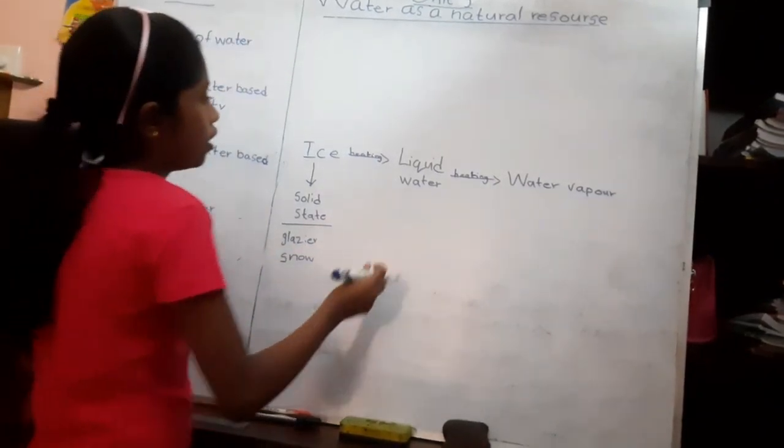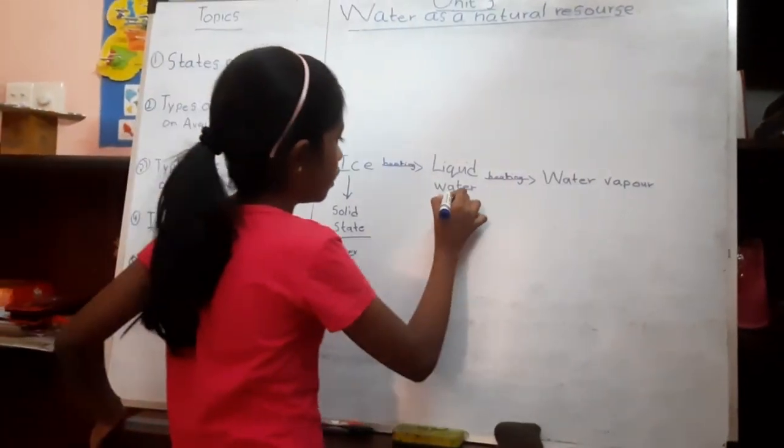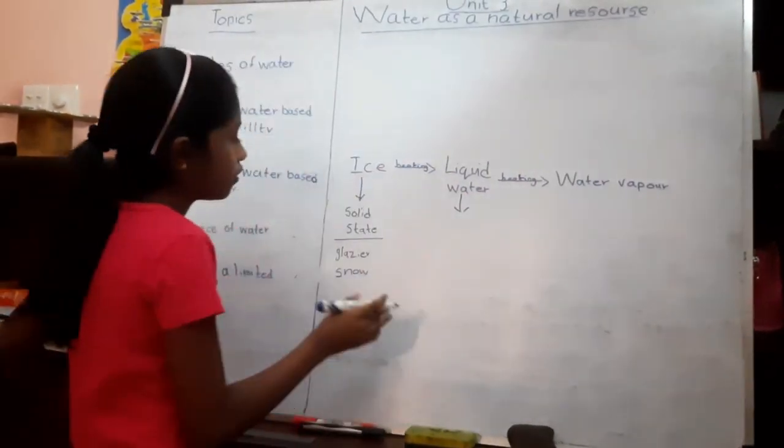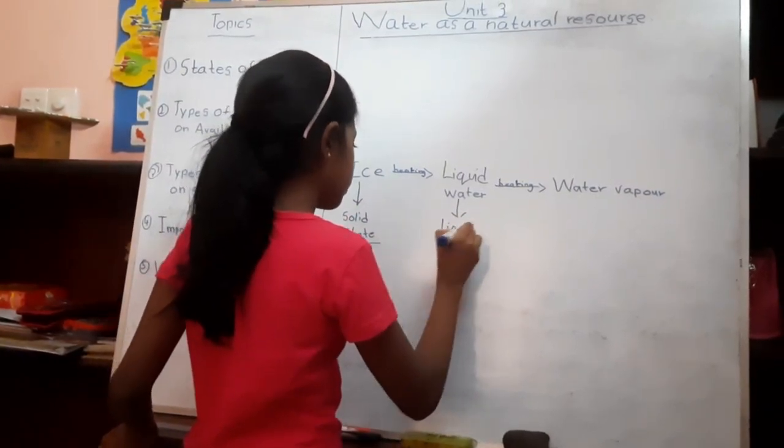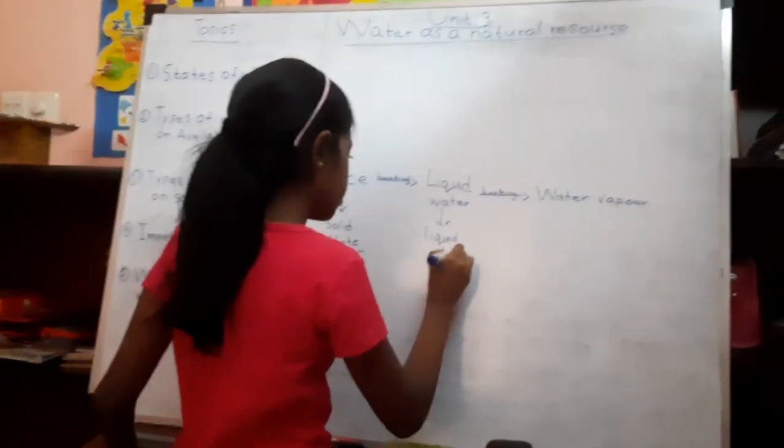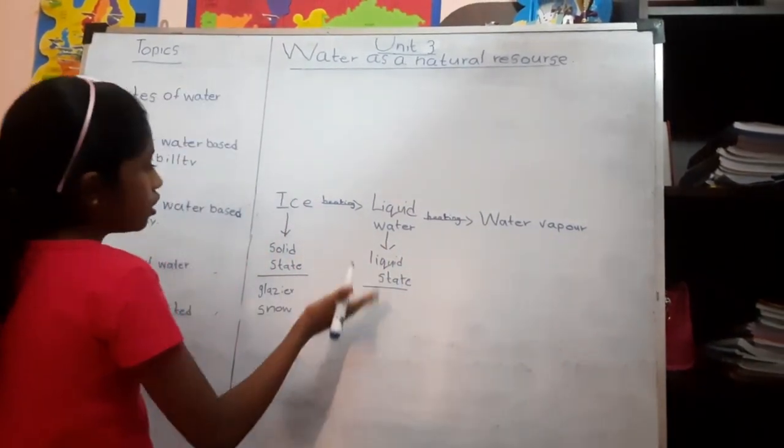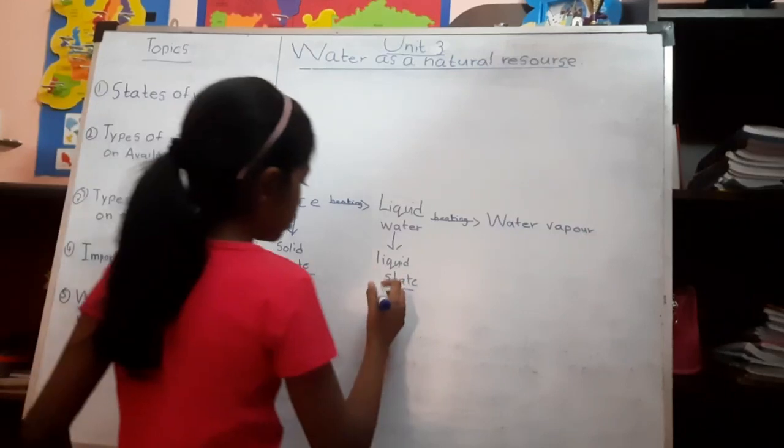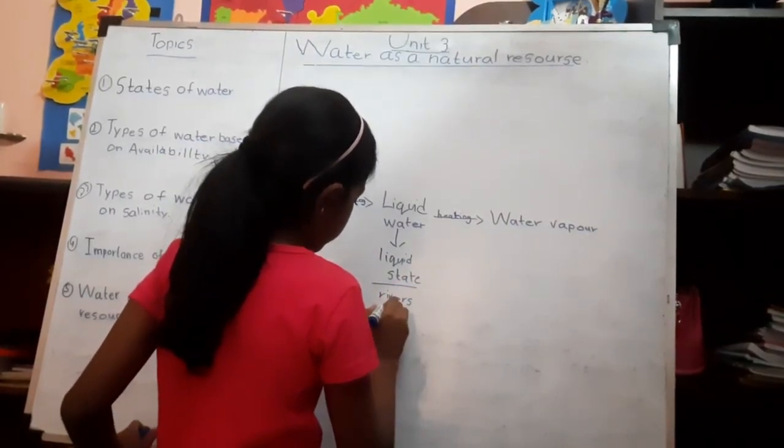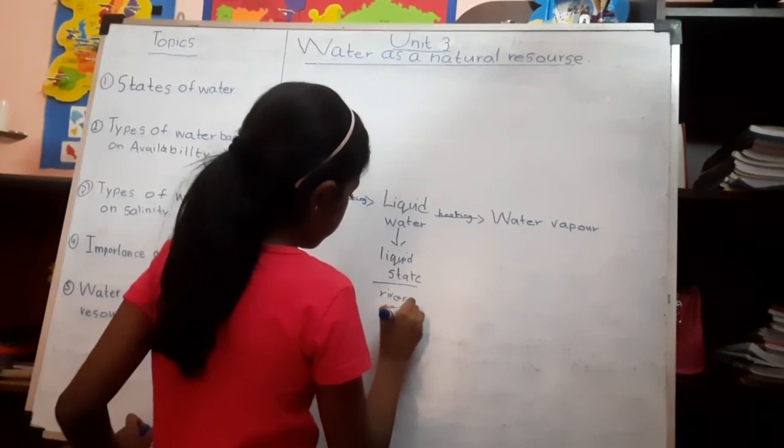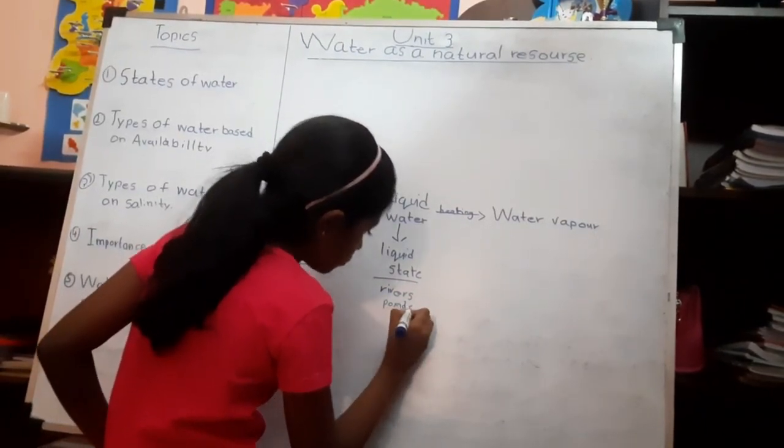So we can identify the liquid water as liquid state of water. The examples for liquid state are rivers, ponds, like that.